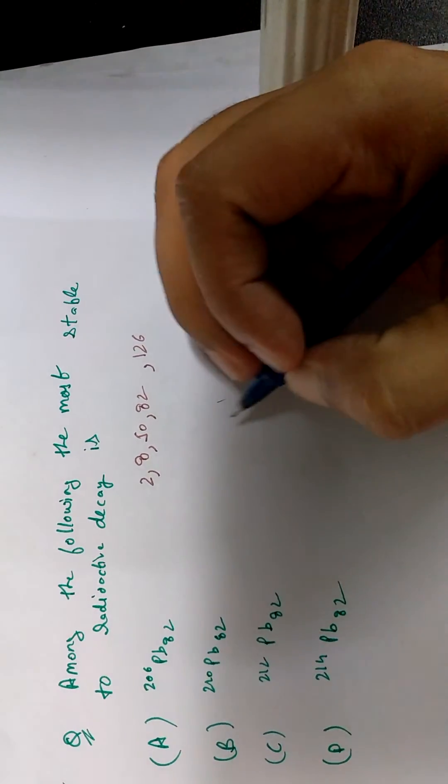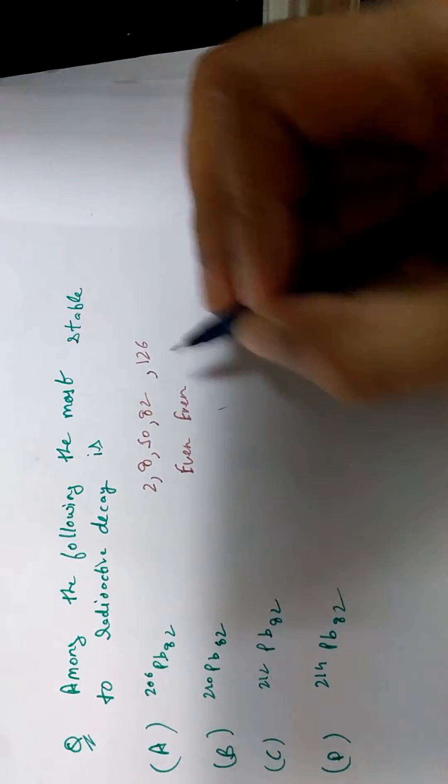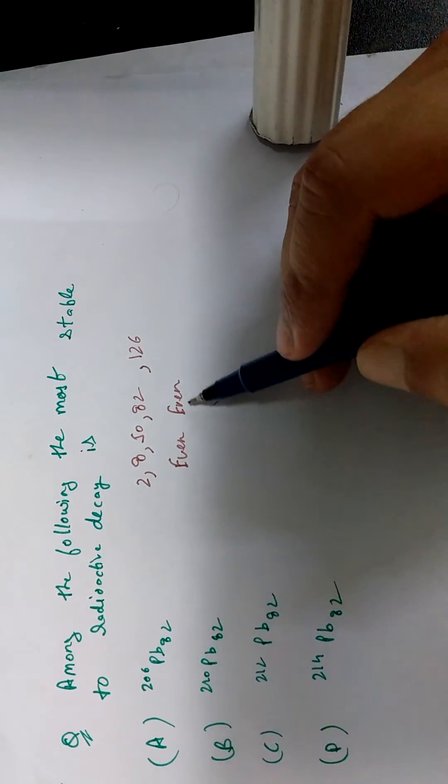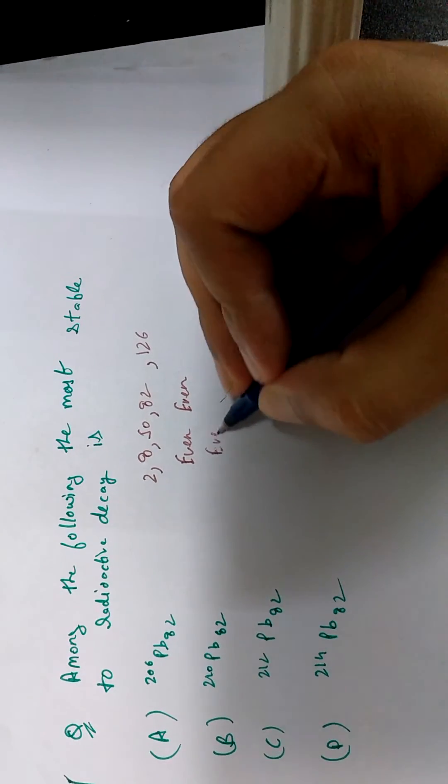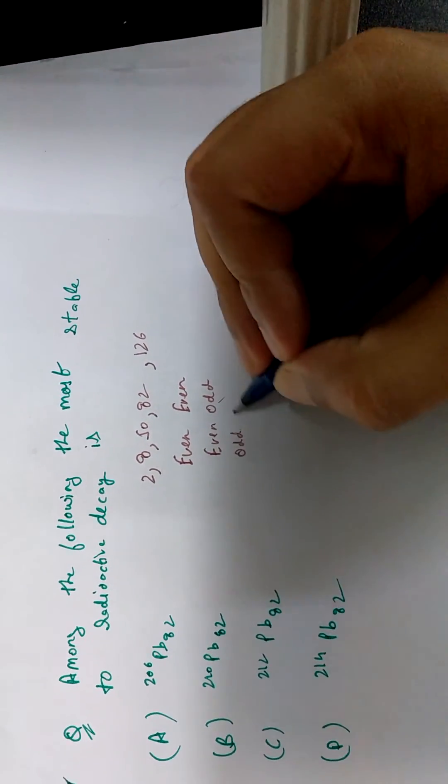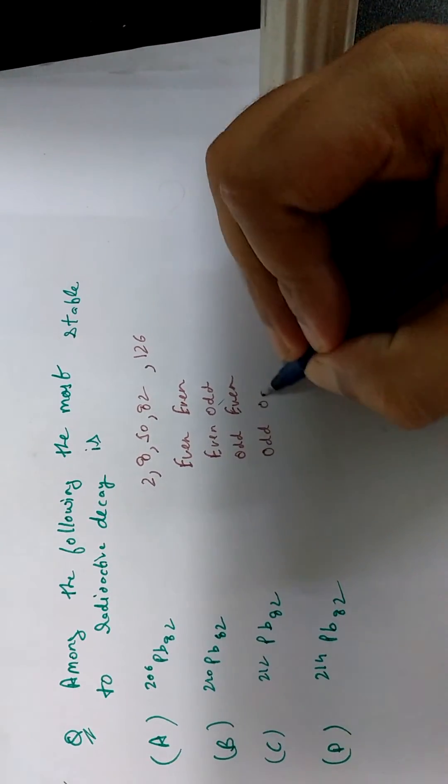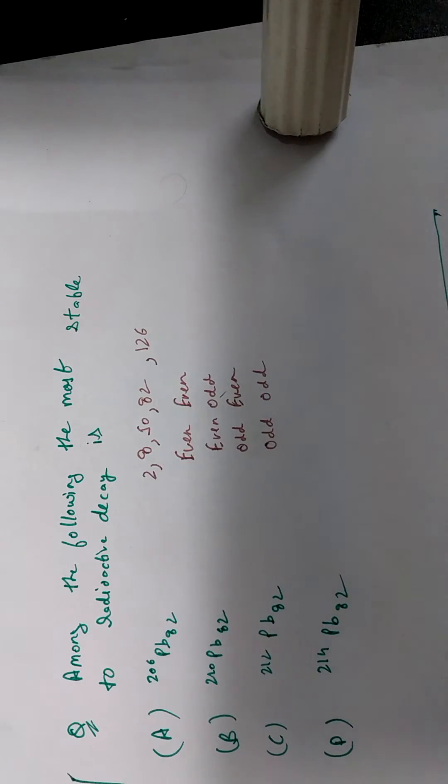The second is that the number of protons and neutrons should be even. So the most stable nucleus that exists in nature, they have even number of protons and even number of neutrons. Similarly, then comes even odd or odd even, right? And then comes odd odd. So these elements which have odd number of neutrons and protons, they too are very unstable and are very rare to be found in nature in a stable form.